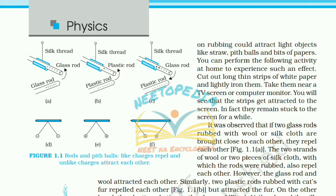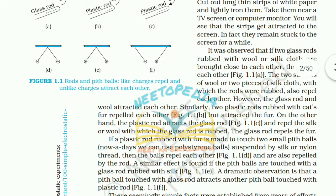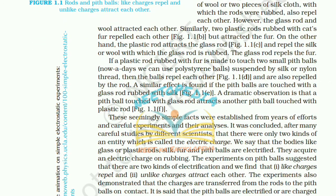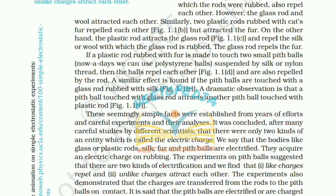The strips get attracted to the screen and remain stuck for a while. It was observed that if two glass rods rubbed with wool or silk cloth are brought close to each other, they repel each other. The two strands of wool also repel each other. However, the glass rod and the wool attracted each other. Similarly, two plastic rods rubbed with cat's fur repelled each other but attracted the fur. A plastic rod attracts the glass rod. A dramatic observation is that a pit ball touched with a glass rod attracts another pit ball touched with the plastic rod.